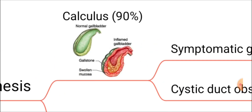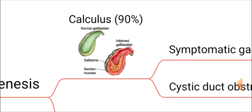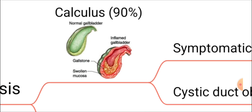This picture shows the normal gallbladder and the inflamed gallbladder with gallstones. With inflammation, all the features of inflammation are present: it is filled and erythematous, the patient feels pain, blood flow to the area is high, there is warmth, and all features of acute inflammation are present.